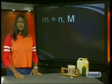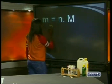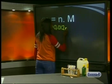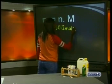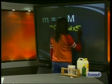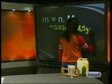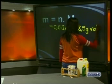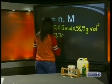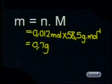So the mass can now be found. Our number of moles is 0.012 mol multiplied by our molar mass of 58.5 g/mol. Our mass is 0.7 grams.